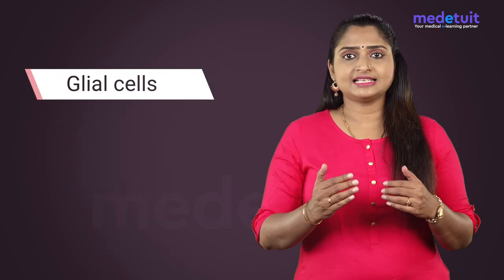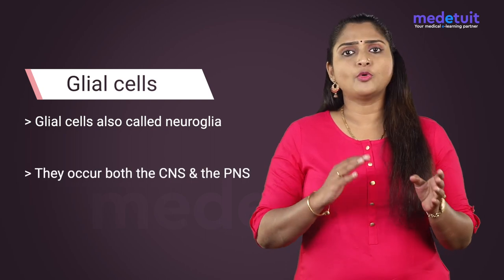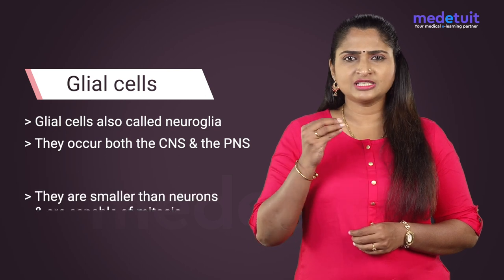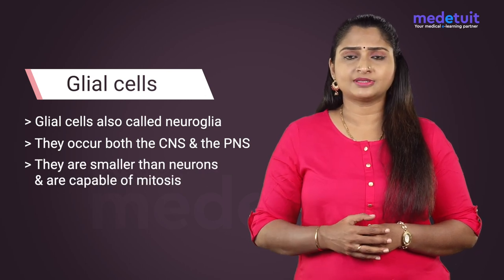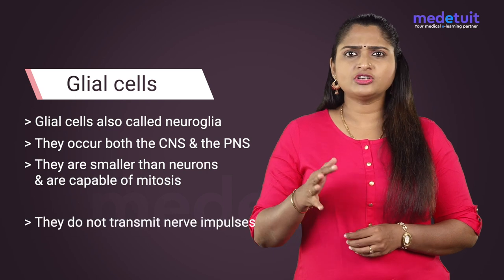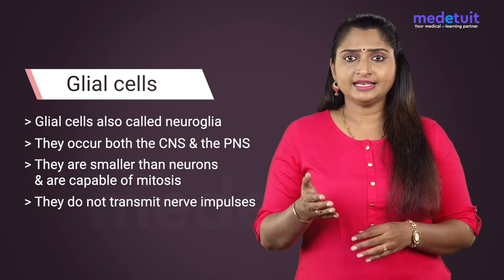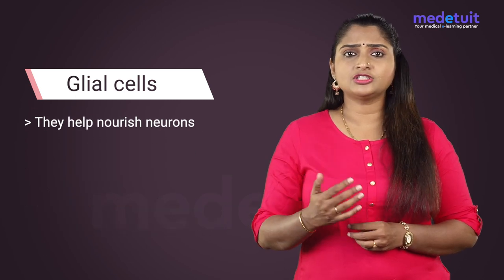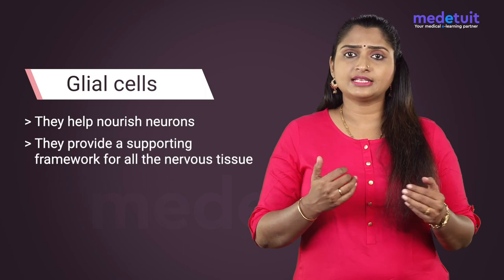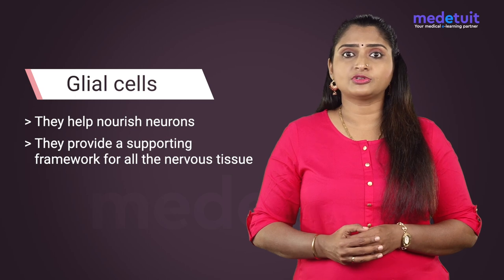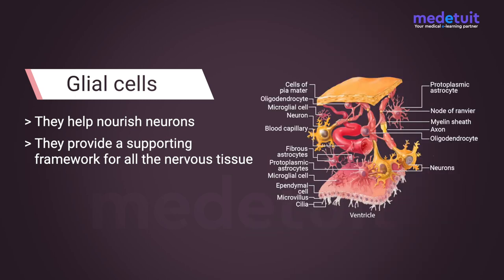Now we shall see the glial cells. Glial cells are also called neuroglia. They occur in both the central nervous system and the peripheral nervous system. They are actually smaller than neurons and are capable of mitosis — that means they can divide. They do not transmit any nerve impulses, but they do have specialized functions: they physically protect the neurons, help nourish them, and provide a supporting framework for all nervous tissue. They actually far outnumber neurons, accounting for about half the volume of the nervous system.